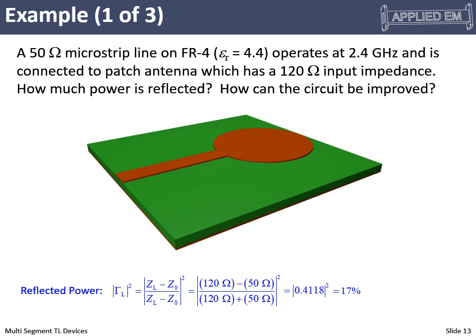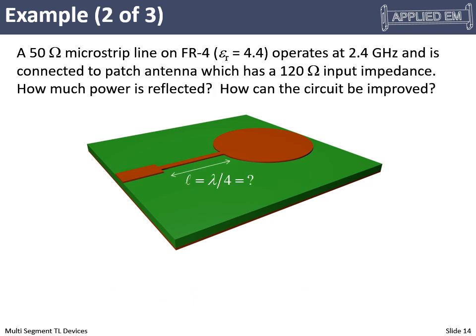What can we do to fix it? We inject a quarter wave transformer that matches the 50-ohm line to the 120-ohm antenna input impedance. The impedance of this anti-reflection quarter wave transformer is the geometric mean — square root of 120 times 50 — which gives 77.5 ohms. This impedance is higher than 50 ohms. Since impedance equals √(L/C), to make impedance go up we need to reduce the distributed capacitance, so we make the transmission line thinner.